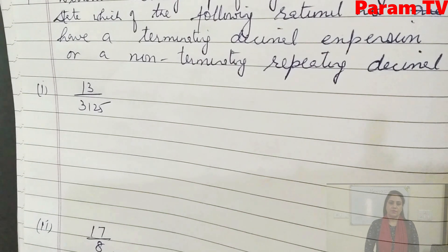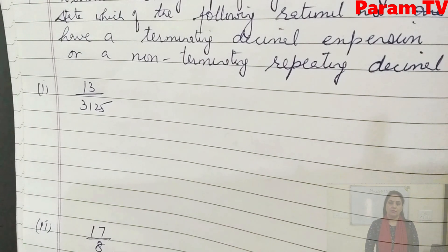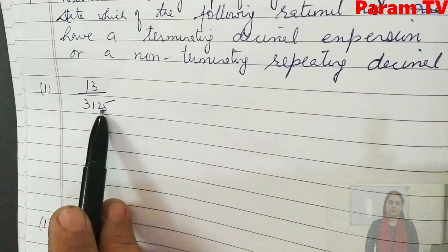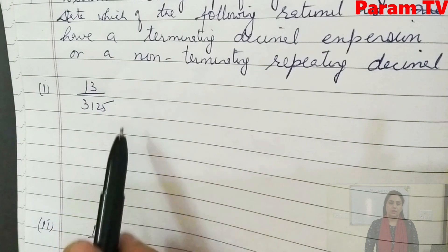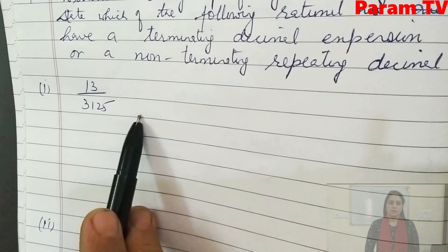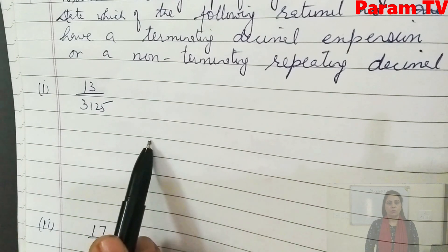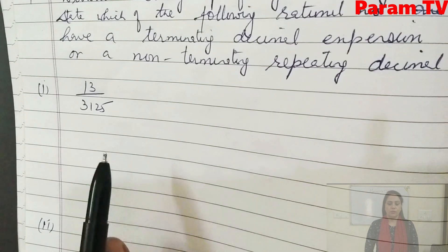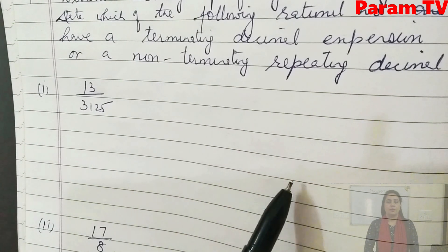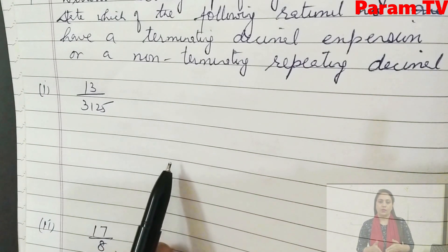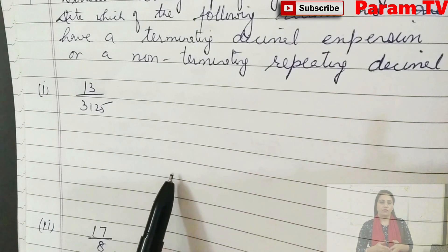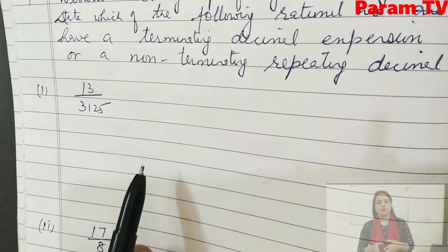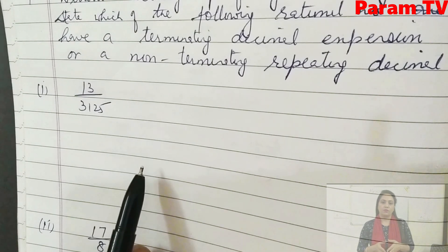When we studied rational numbers in the last class, we learned that in the denominator, if we make the prime factors and in those prime factors we have only 2 or 5 factors — or both 2 and 5, or only 2, or only 5 — then they are terminating decimals. Or, if we have other factors like 3 or 7, then they are non-terminating decimals.